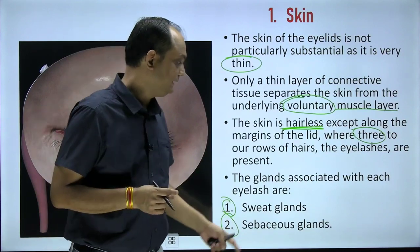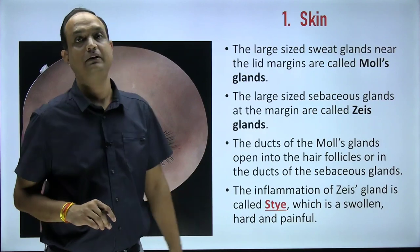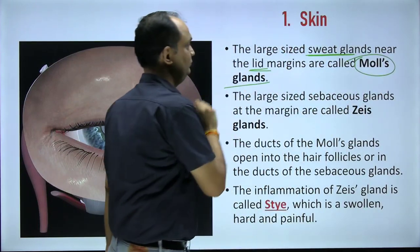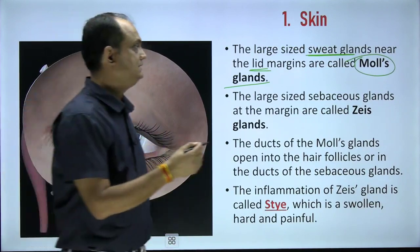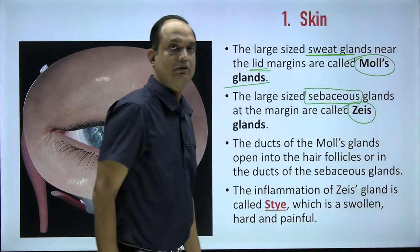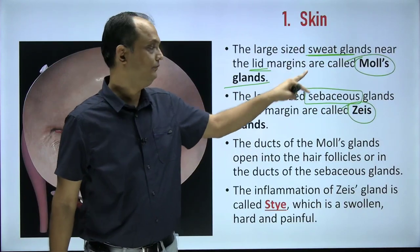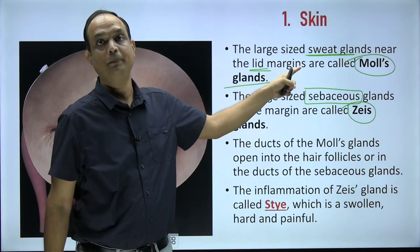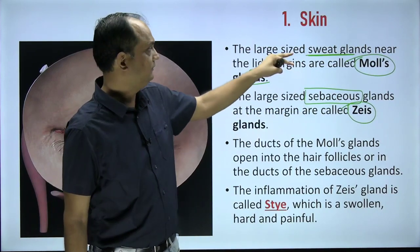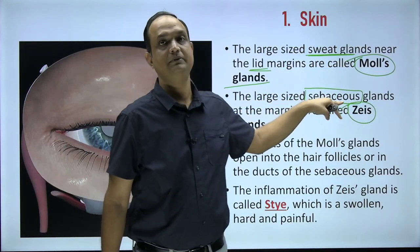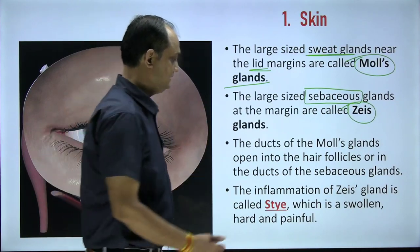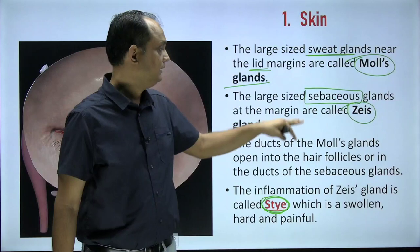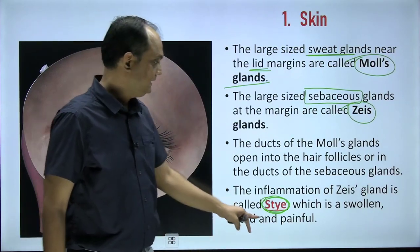The skin of the eyelid is devoid of fat and has sweat and sebaceous glands. The large sweat glands present on the margins of the eyelid are known as Moll's glands. The large sebaceous glands related to the eyelashes are known as the glands of Zeiss. The duct of Moll's gland opens into the hair follicle or into the sebaceous gland. A stye is the inflammation of the glands of Zeiss — it is a swollen, hard, painful condition along the margin of the eyelid.